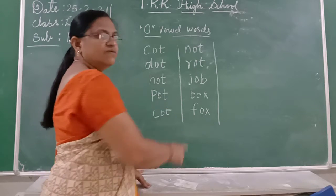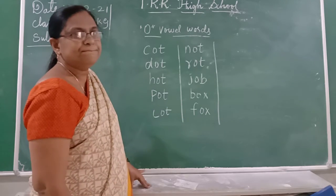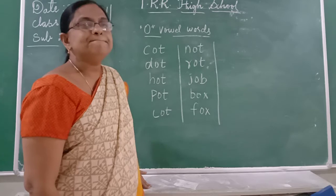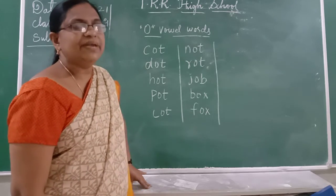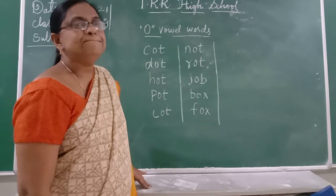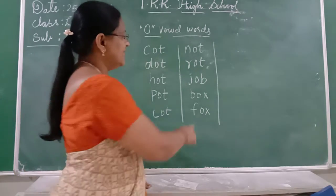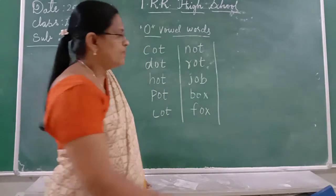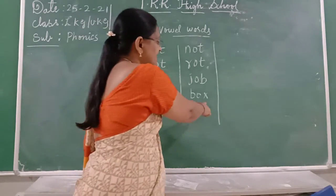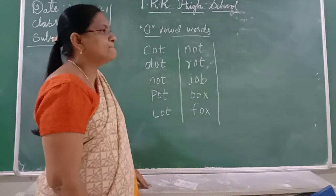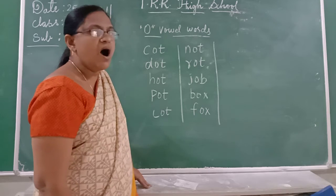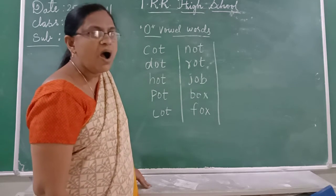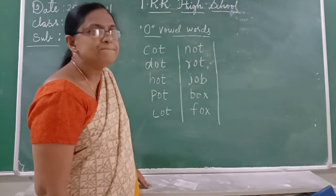Then we move on to the next word. What is the sound of B? The sound of B is B. Then the sound of O is O. And the sound of X. B-O-X. Box.